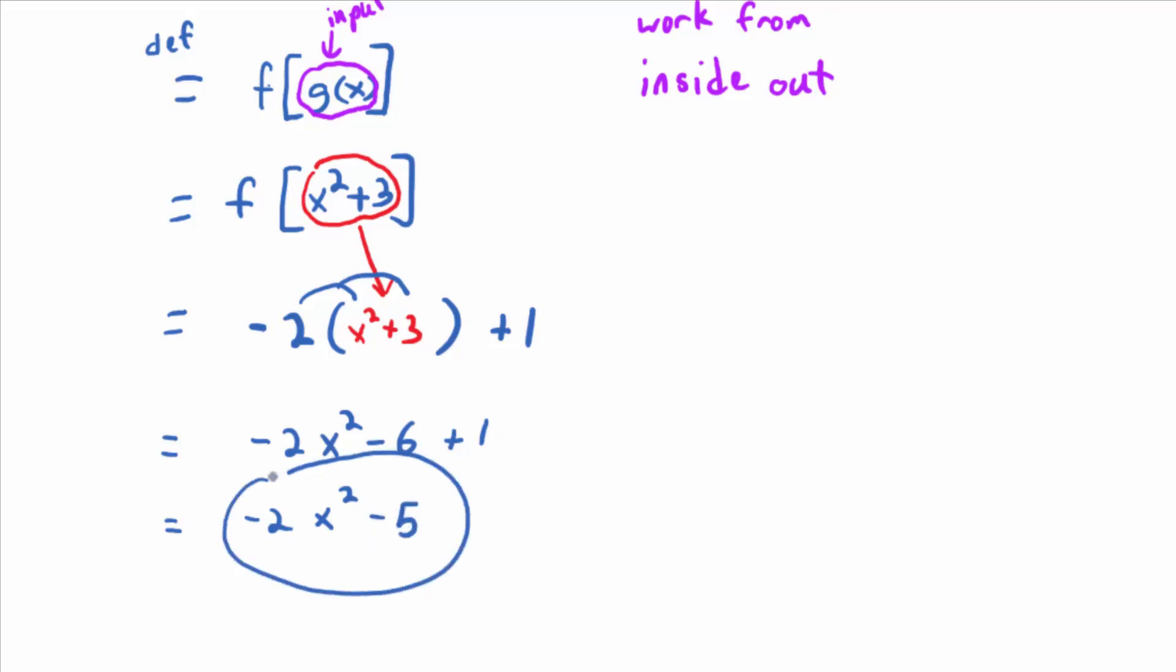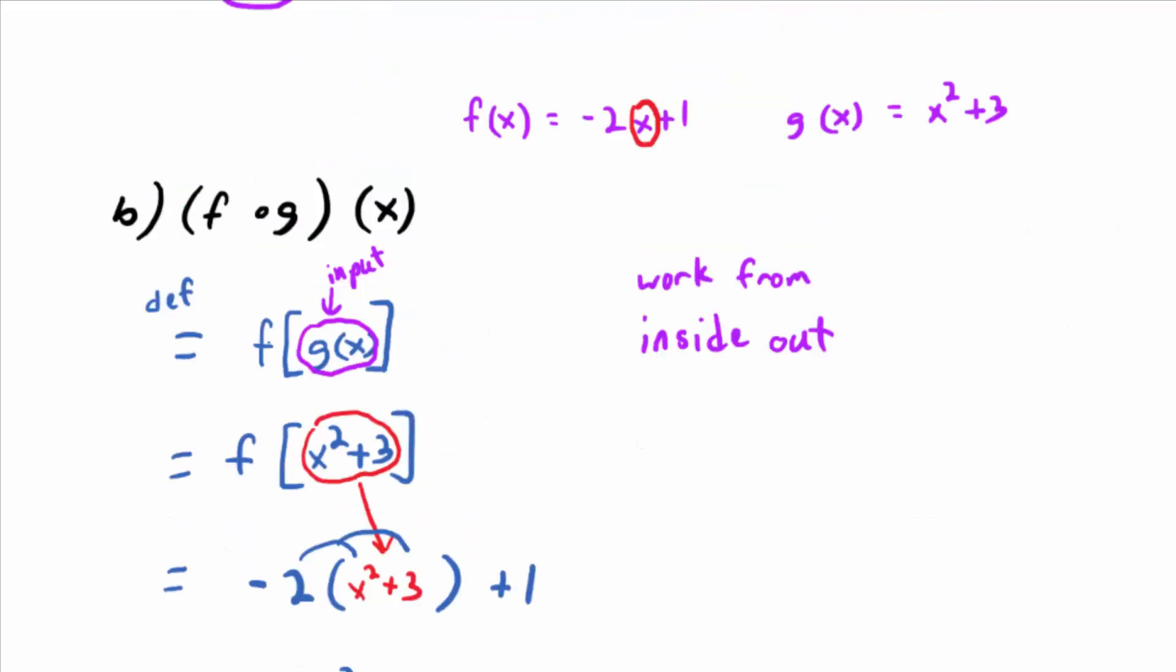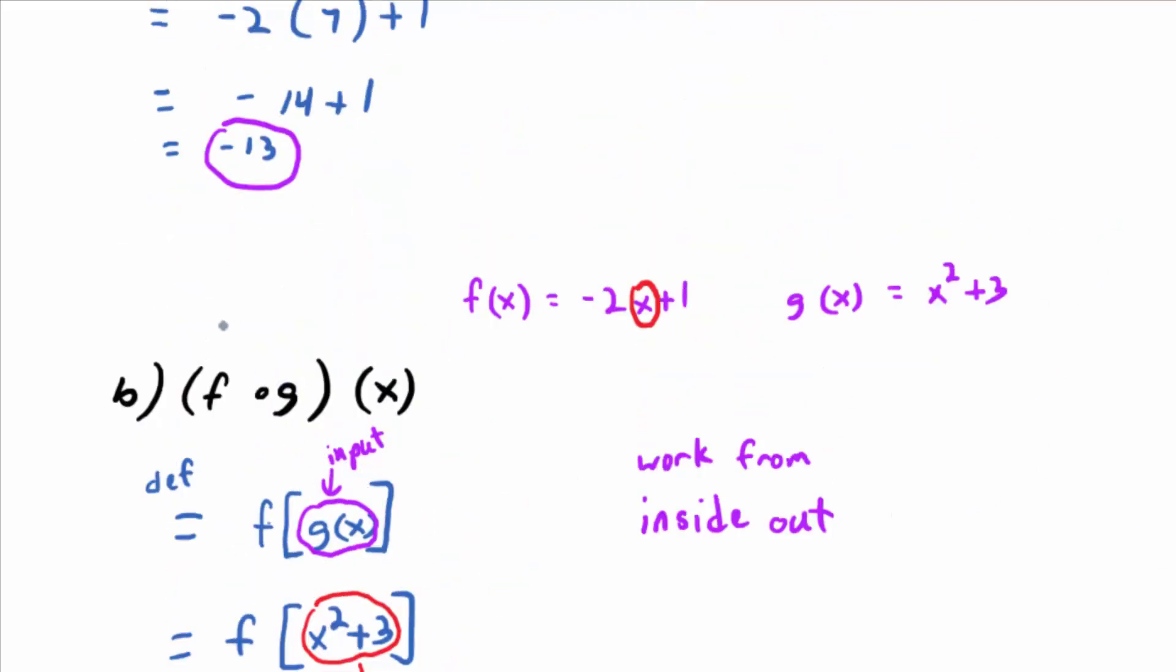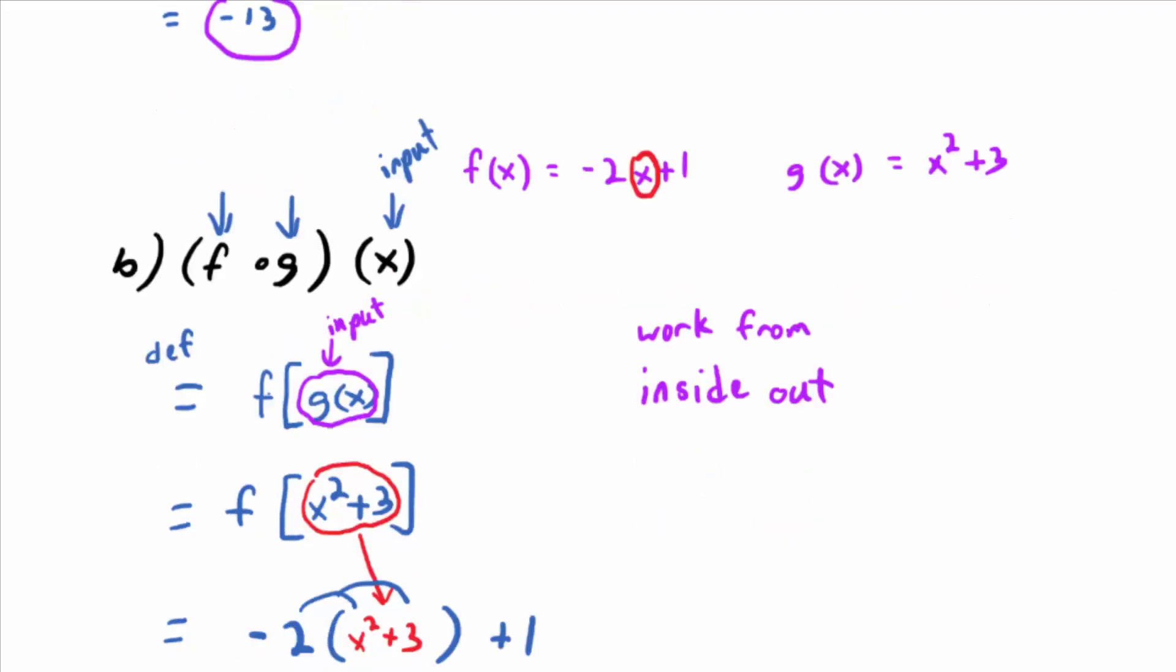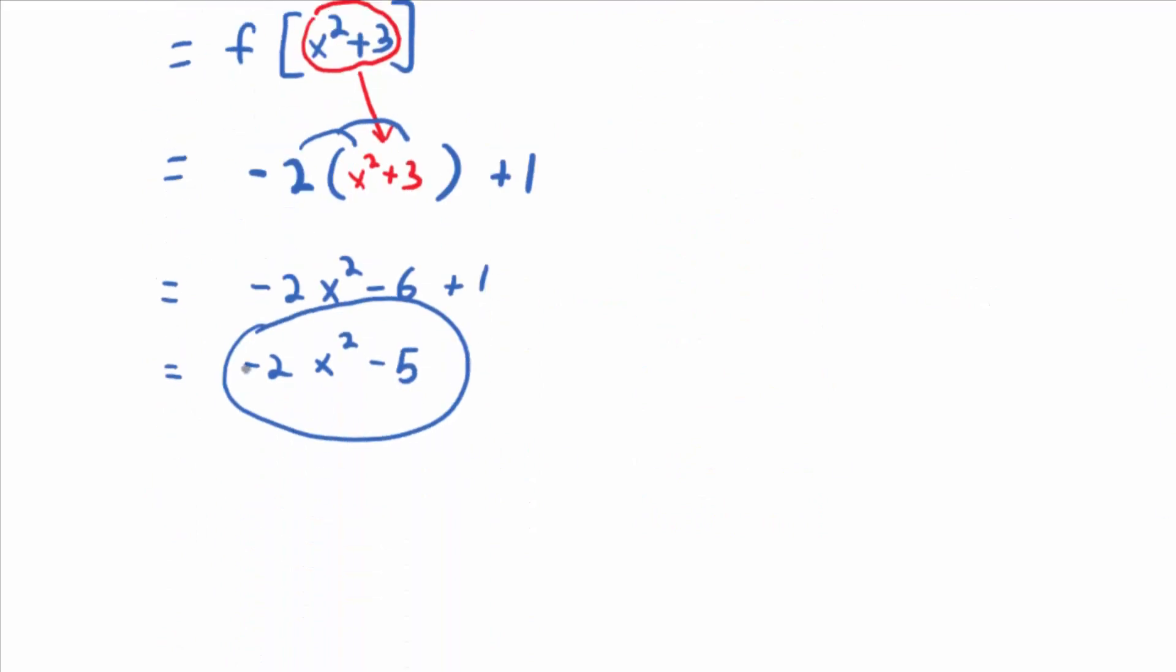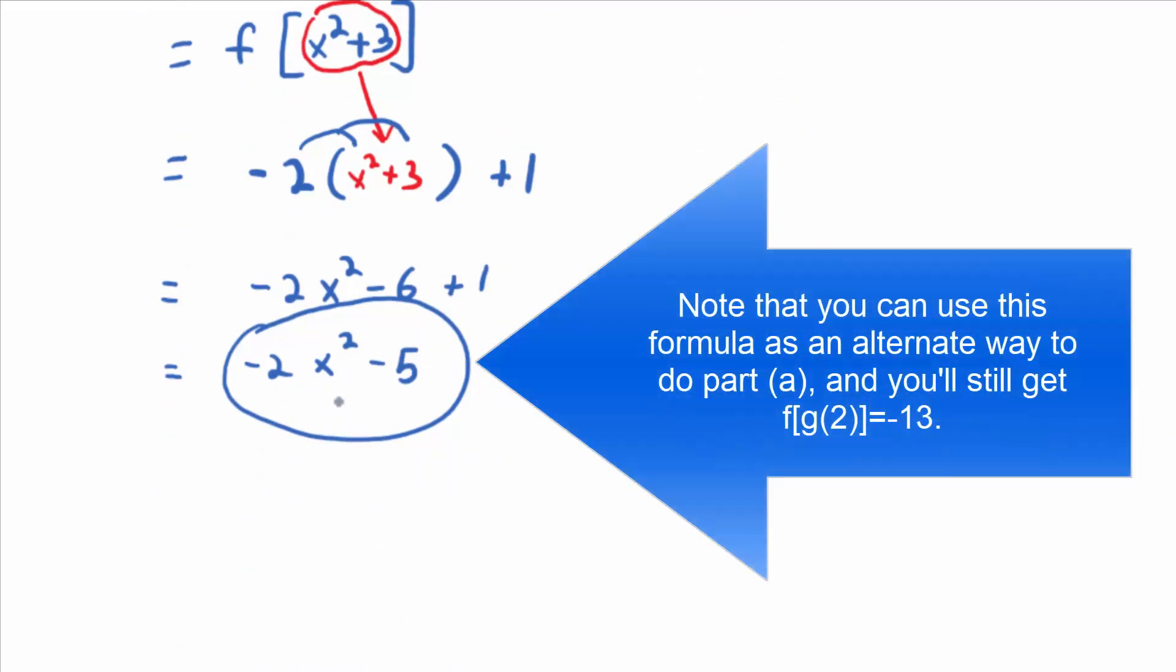So, guys, what we're saying is this. The new function, when you compose these two functions, f and g, and you make the input x, just a generic x, it creates a new function. And the new function formula, f composed with g, the new function formula is negative 2x squared minus 5. That's all we're saying.